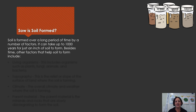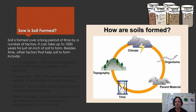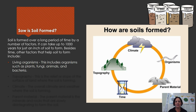How is soil formed? It's actually formed in a number of ways and over a very long time. It can take up to a thousand years just for an inch of soil to form. Besides time, there are other factors that help soil to form, including living organisms — things like worms and microorganisms that help to break down organic material.